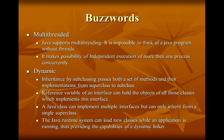A Java class can implement multiple interfaces but can only inherit from a single superclass — that means a class can be a subclass of another class but can inherit more than one interface. Just like in the real world, a person has one father but many teachers. A person inherits things from his father, but to gain extra qualities goes to different teachers. Similarly, a single class can inherit one superclass and implement more than one interface.